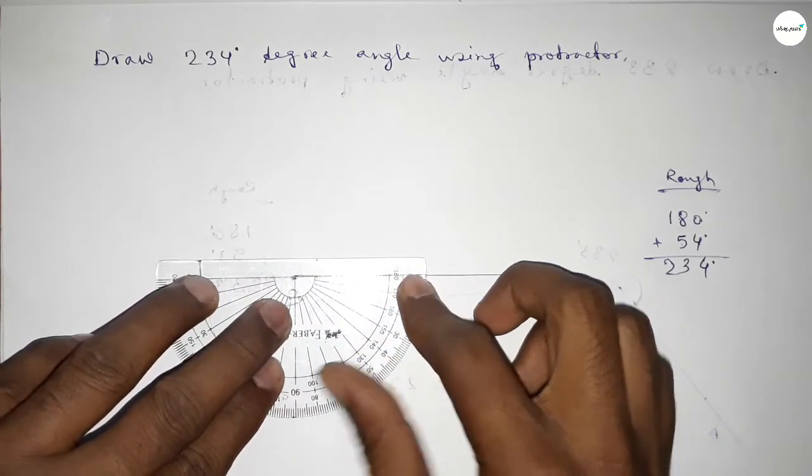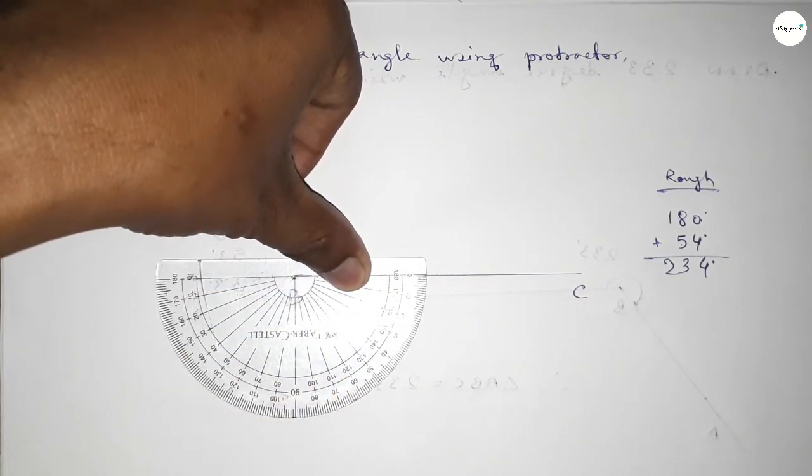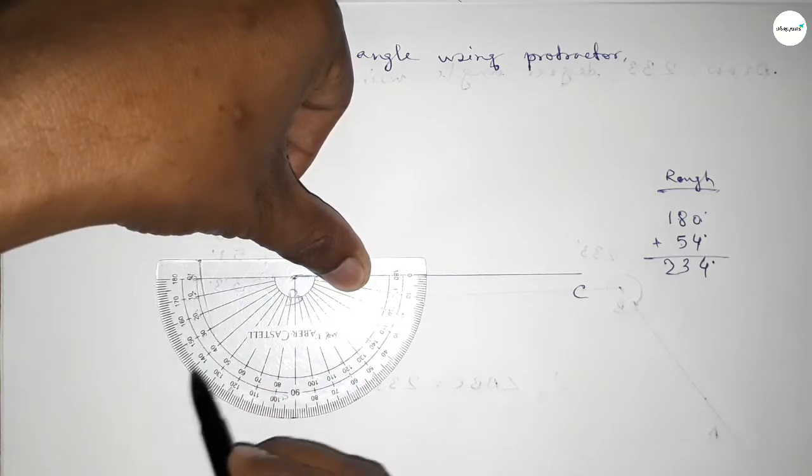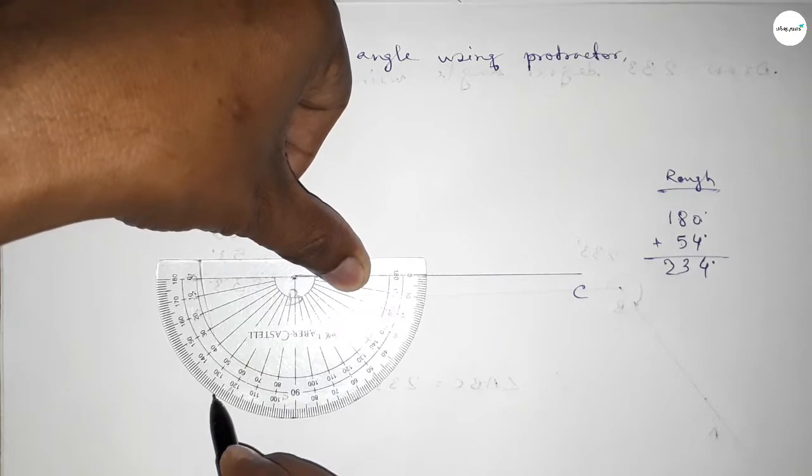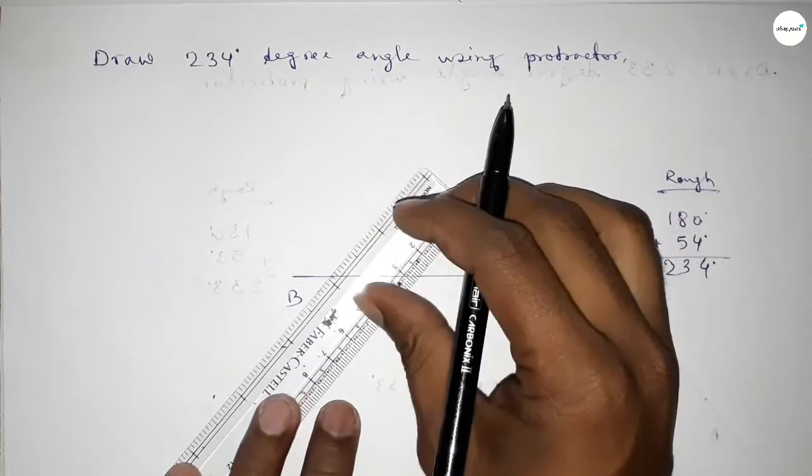54 degree angle. So this is starting, so this is 180 degree and this is also starting 0, 10, 20, 30, 40, 50, 51, 52, 53, and 54. So this is 54. Now adding 54 degree angle with 180 degree,